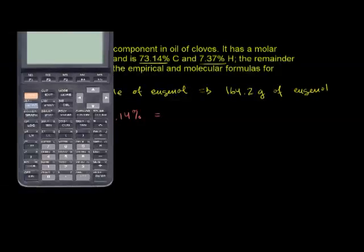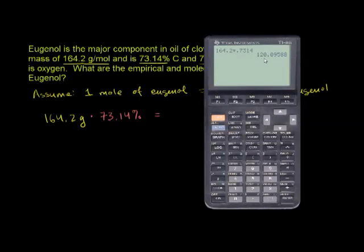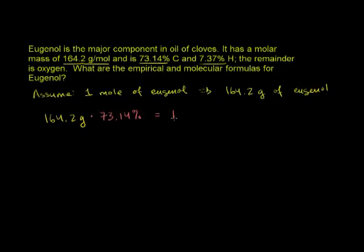Calculating the mass of carbon: 164.2 times 0.7314 gives us 120.1 grams. We have four significant digits in each of these numbers, so we go with 120.1 grams of carbon.